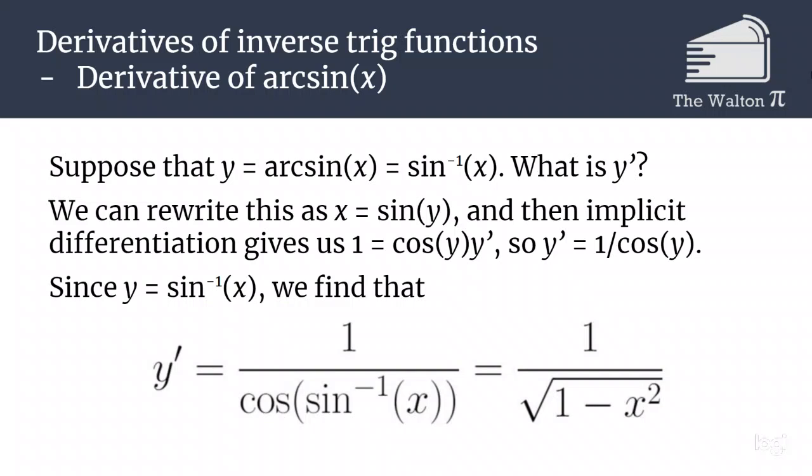Since y equals the inverse sine of x, we can replace the y in 1 over cosine of y with arc sine of x, giving us y prime equals 1 over cosine of inverse sine of x. Now, if we draw out a triangle, we can figure out what cosine of inverse sine of x would be, and that's the square root of 1 minus x squared. So the derivative of inverse sine of x is 1 over the square root of 1 minus x squared.